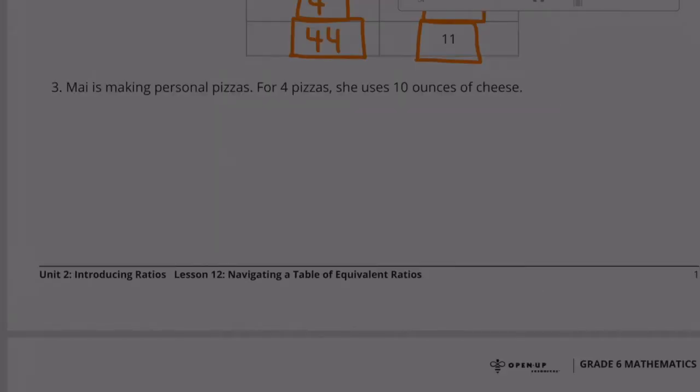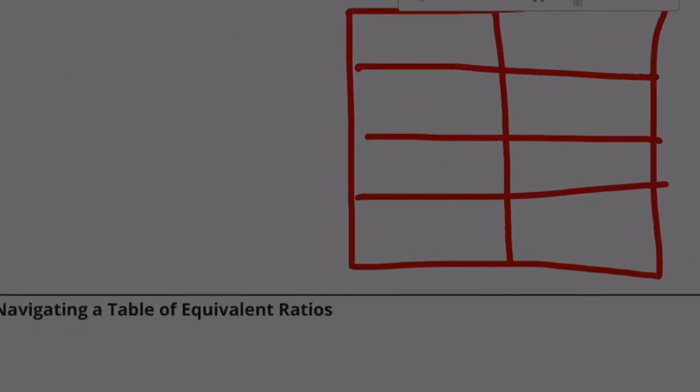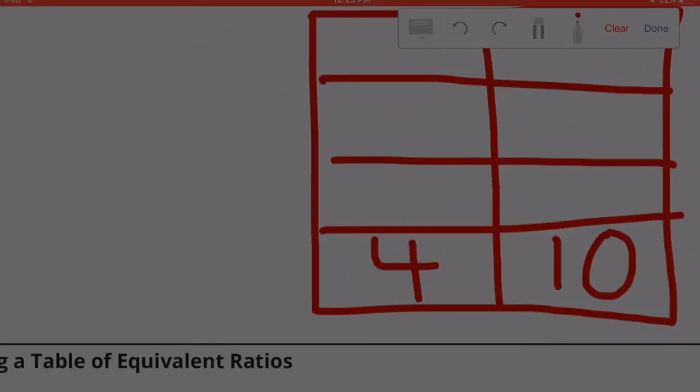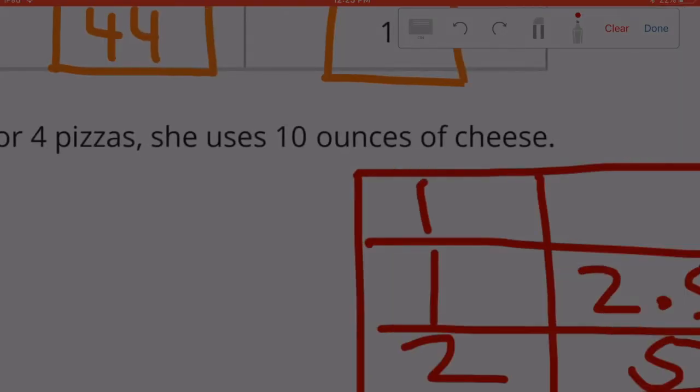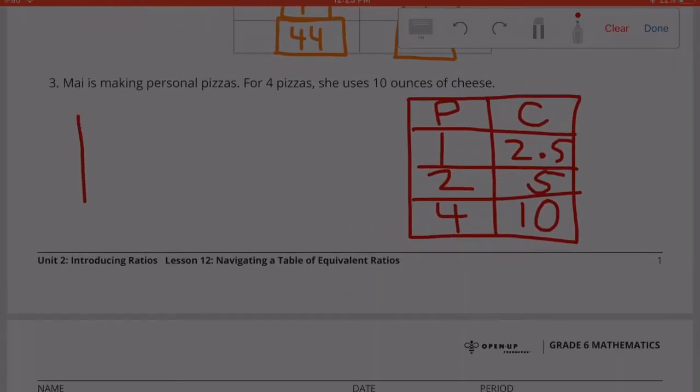Number 3. Mai is making personal pizzas. For 4 pizzas, she uses 10 ounces of cheese. 4 pizzas, 10 ounces of cheese. So I know that 2 pizzas would be half of that. So that would be 5 ounces. Half of 2 is 1 and half of 5 is 2.5. So these are pizzas, and these are ounces of cheese. So for every one pizza, she uses 2.5 ounces of cheese.